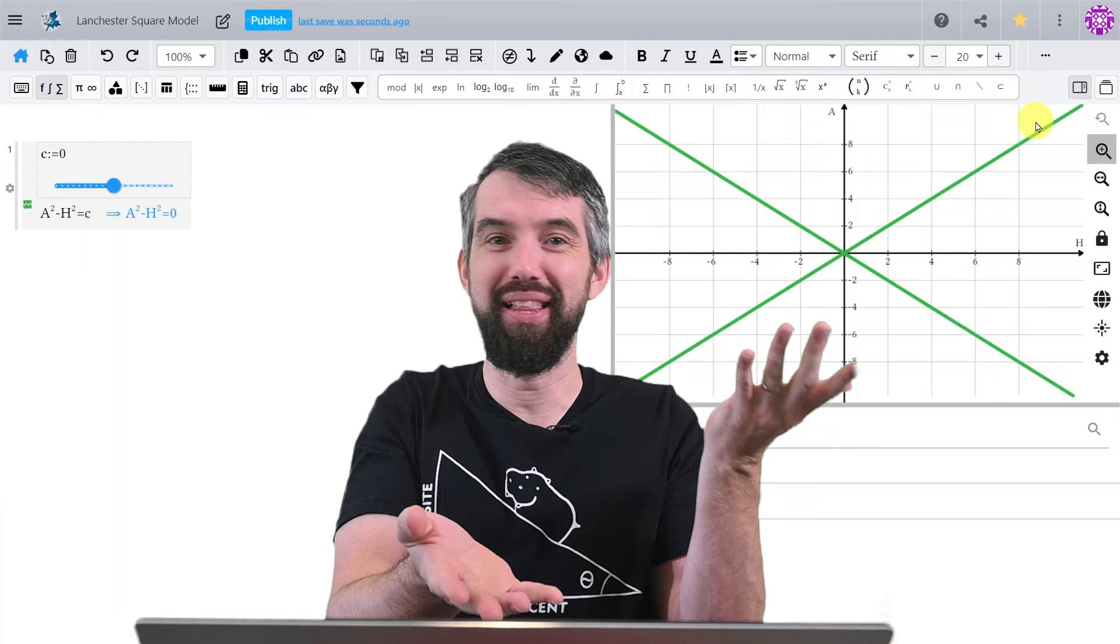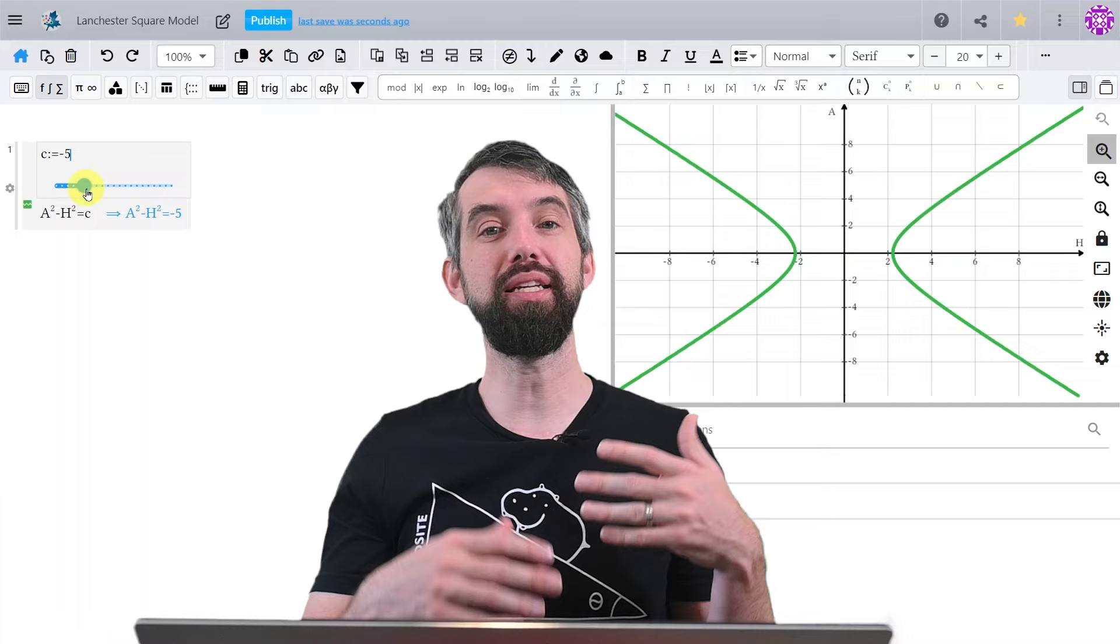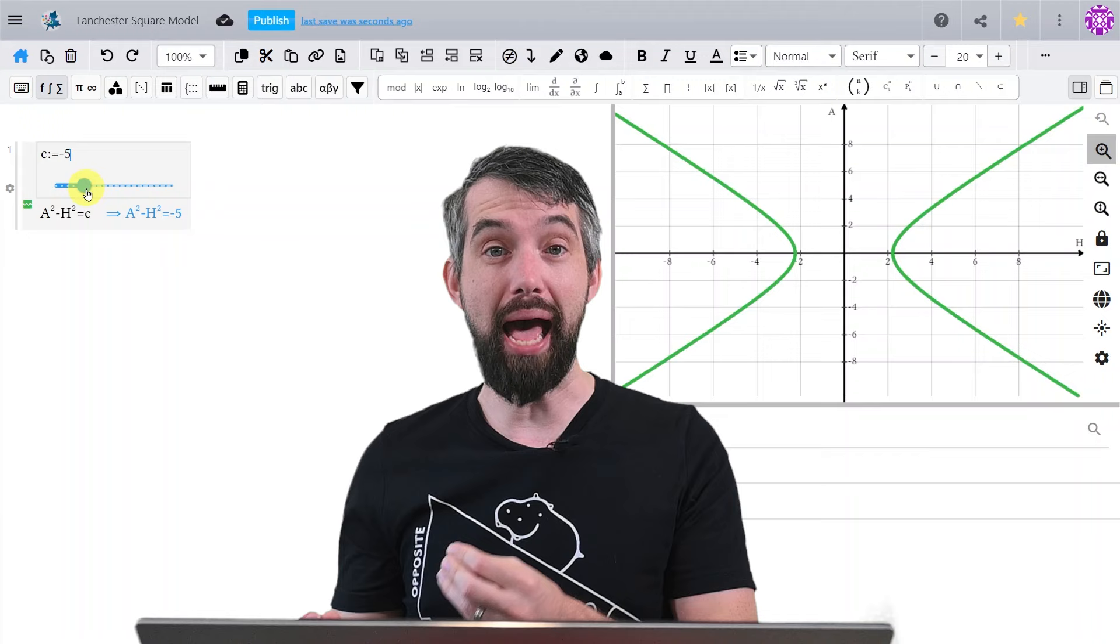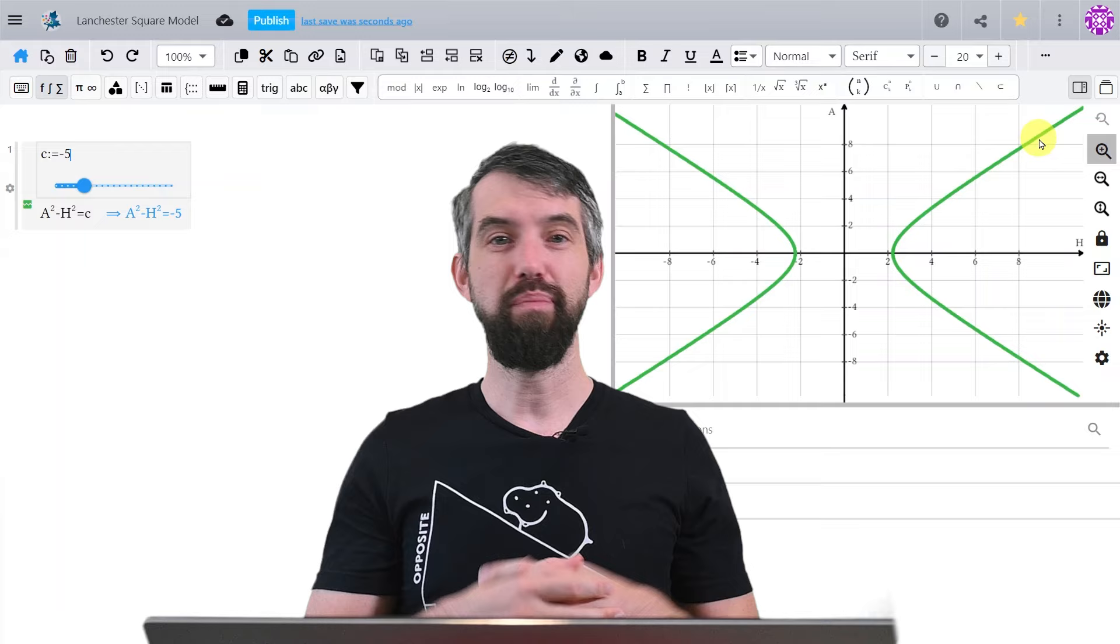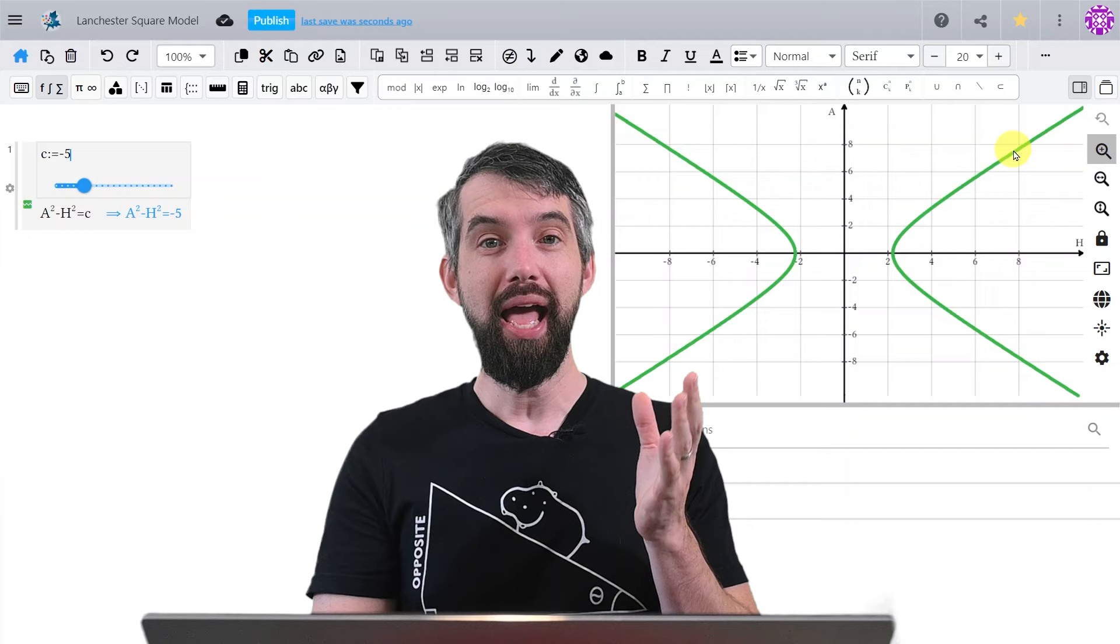But what I really like about this model is it illustrates what we refer to as Lanchester's Square Collapse. And the argument here is if I am far away from the end of the battle, both sides are losing troops and sort of going down at this approximately constant rate of change. But as you start getting smaller,